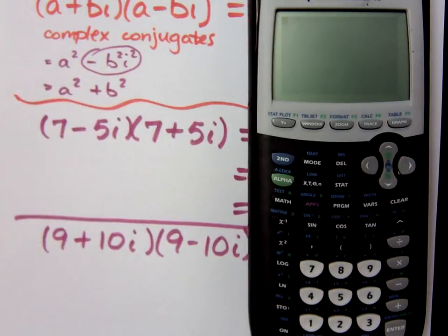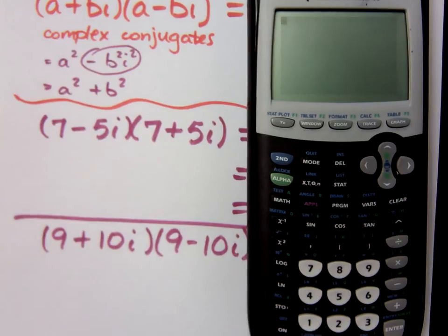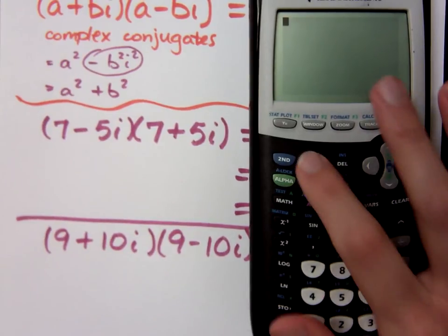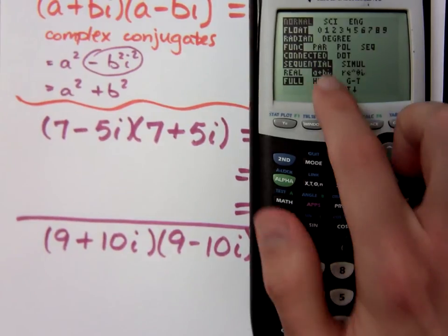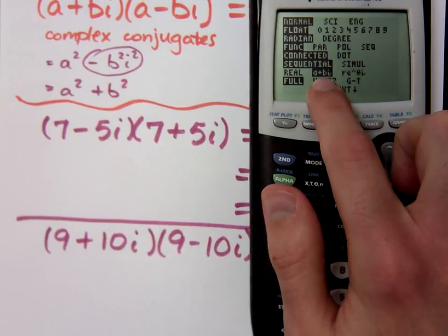You can use the graphing calculator to work with complex numbers. Make sure that you're in the correct mode — that you have a+bi selected.